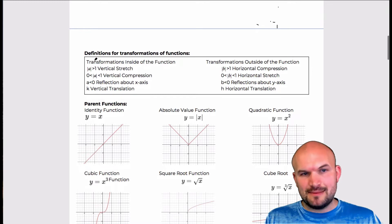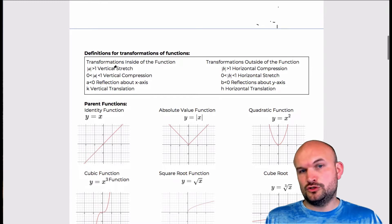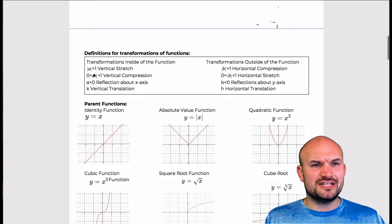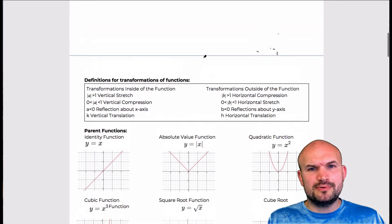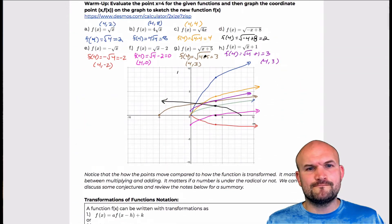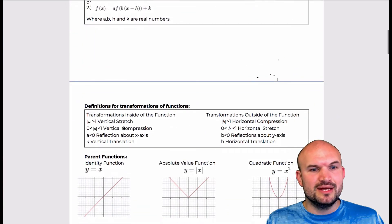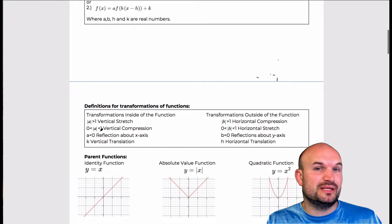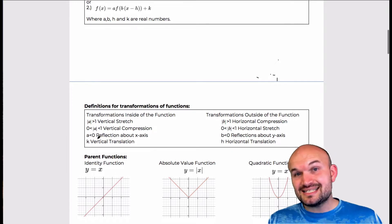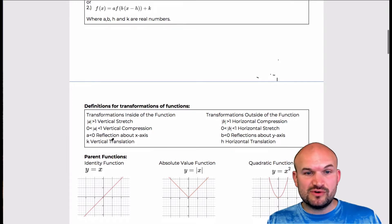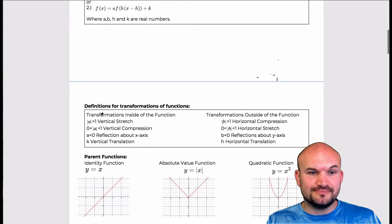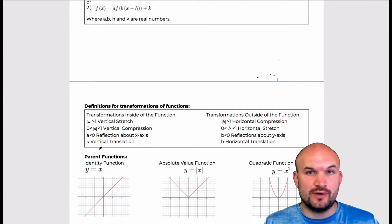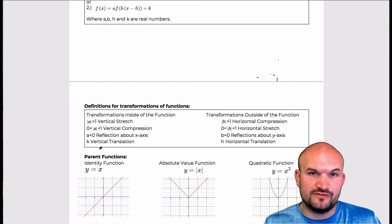When the absolute value of a is larger than 1, that's what we call a vertical stretch, as you saw in the first example. A vertical compression is when the absolute value of a is a fraction between 0 and 1. When a is less than 0, meaning a is negative, that's a reflection about the x-axis. And k gives us a vertical translation — if we're adding, we go up; if we're subtracting, we shift the graph down.